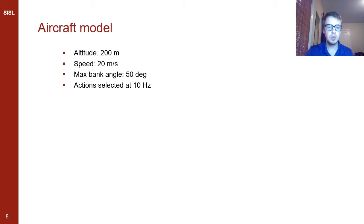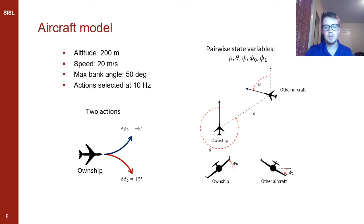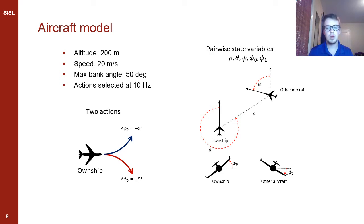The aircraft model assumes the aircraft maintains an altitude of 200 meters in steady level flight at 20 meters per second and can bank up to 50 degrees to turn. Actions are selected at 10 Hz and are bank angle commands that increment or decrement the bank angle by 5 degrees, tracked by a PD controller. For the multi-agent problem, we incorporate pairwise information: the relative position, heading direction, and bank angles of both aircraft. We assume the aircraft are communicating and that both are controlled by the same policy.